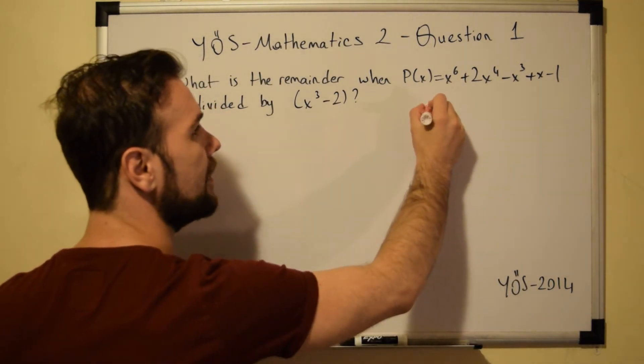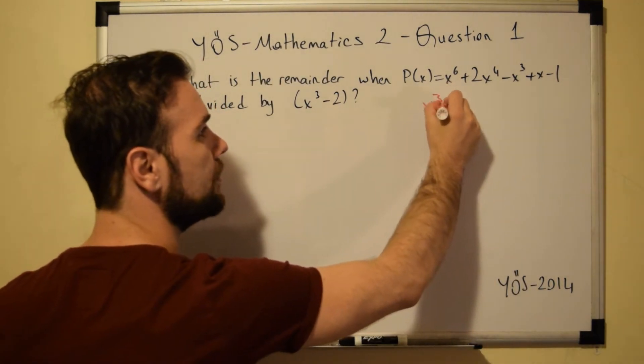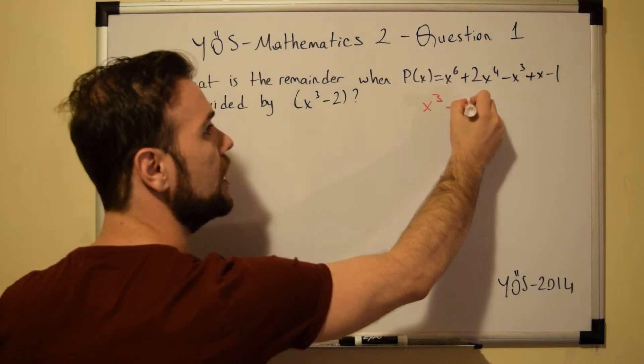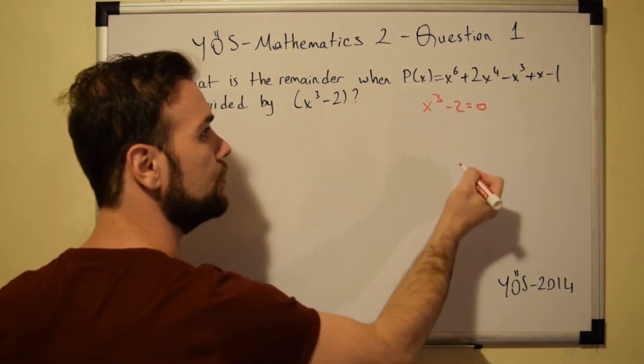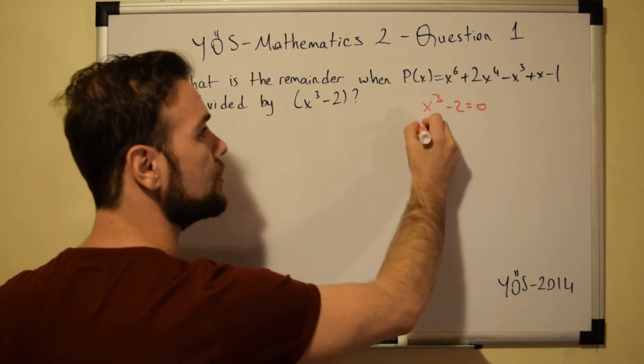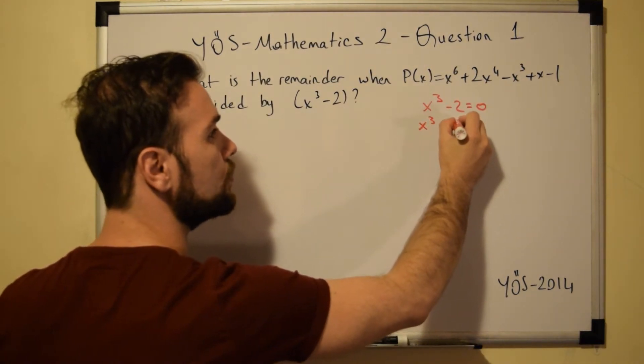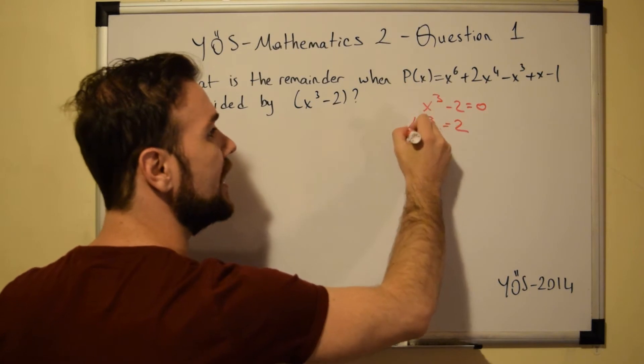So let's do that. We have x to the power of 3 minus 2, and we equalize it to 0. So x to the power of 3 equals 2.